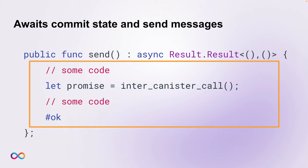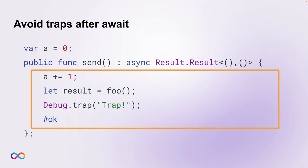To summarize: a shared function call can potentially be divided into many messages by awaits. With this knowledge, we should avoid traps after an await. A trap is a non-recoverable runtime failure caused by, for example, division by zero, out-of-bounds array indexing, numeric overflow, cycle exhaustion, or an assertion failure. On a trap, the modifications to the canister state for the current message are not applied. An atomic shared function whose execution traps has no visible effect on the state of the enclosing actor or its environment — any state change is reverted and any message it has sent is revoked.